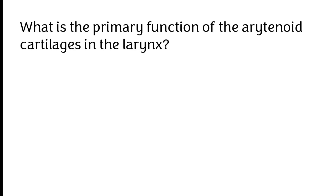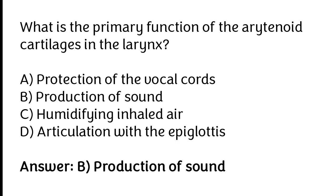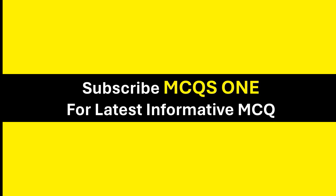What is the primary function of the arytenoid cartilage in the larynx? Protection of the vocal cord, production of sound, humidifying inhaled air, articulation with the epiglottis. The correct answer is option B — production of sound. Thanks for watching; subscribe to MCQs1 for the latest informative MCQs.